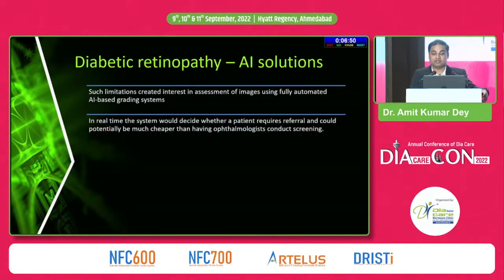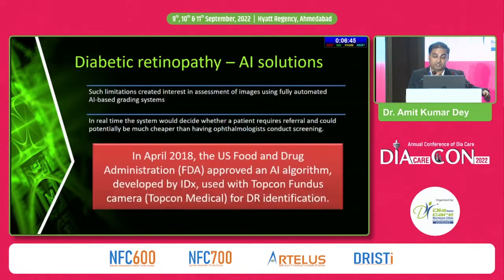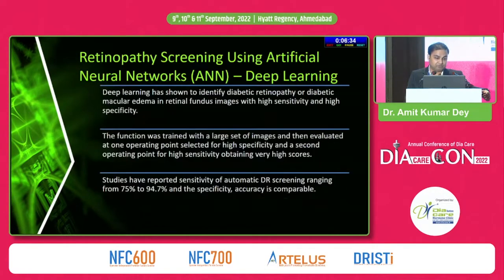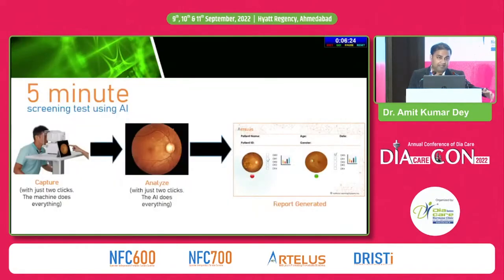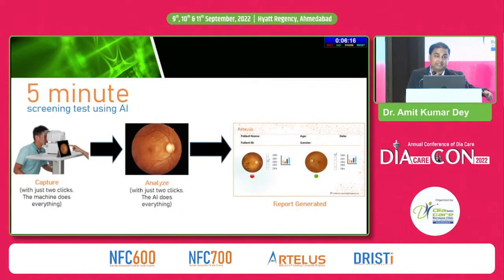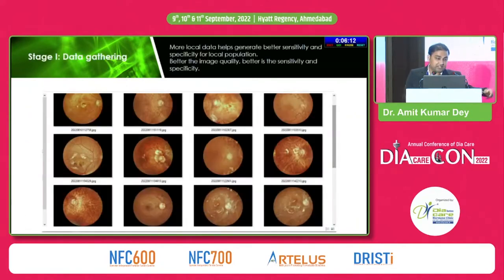Need is the mother of invention, and that led us to look for AI solutions for grading diabetic retinopathy. In real time, the system decides whether a patient requires referral and could be much cheaper than having ophthalmologists conduct screening. In April 2018, the US FDA approved an AI algorithm developed by IDX, used with fundus cameras for diabetic retinopathy identification. We talked about artificial neural network and deep learning used in screening — it looks like a simple five-minute screening test where you capture, analyze, and get a report.